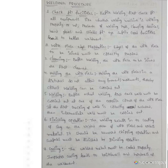Second, work piece edge preparation — the edges of the work piece to be joined must be correctly prepared. Third, cleaning — before welding, the work piece to be joined must be first cleaned. Fourth, hold the work piece — the work pieces should be held in a fixture and not allowed any movement, so that correct welding can be carried out. If there is any movement, the welding will be improper.